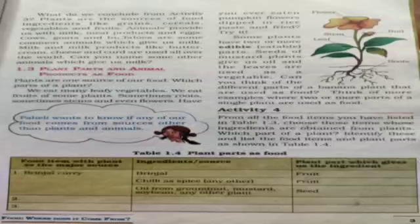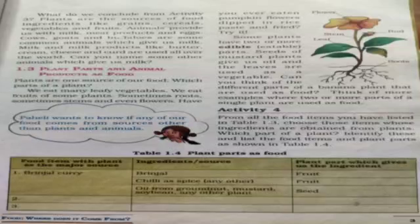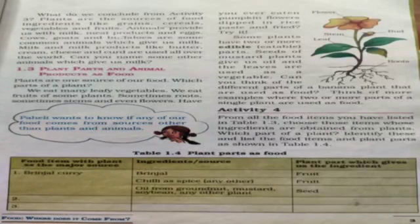Some plants have two or more edible parts. For example, mustard plant seeds give us oil, and the leaves can be used as a vegetable. Similarly, in a banana plant, the flower and the fruit can both be eaten.